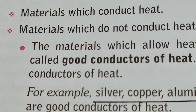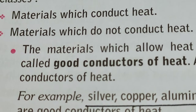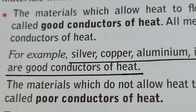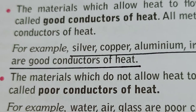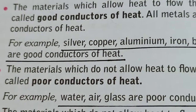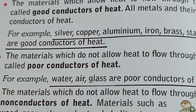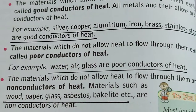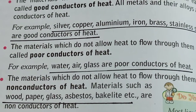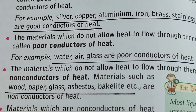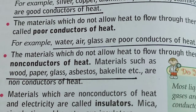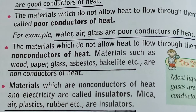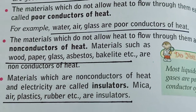In nature, all materials can be classified as materials which conduct heat and materials which do not conduct heat. Materials which conduct heat may be good conductors or poor conductors, but both are conductors. For example, silver, copper, aluminum, iron, brass, and stainless steel are good conductors of heat. Whereas water, air, and glass are poor conductors because they conduct heat very slowly. Some materials do not allow heat to flow through them at all — like wood, paper, glass, asbestos, and bakelite — these are called non-conductors of heat. Air, plastic, and rubber are used as insulators.